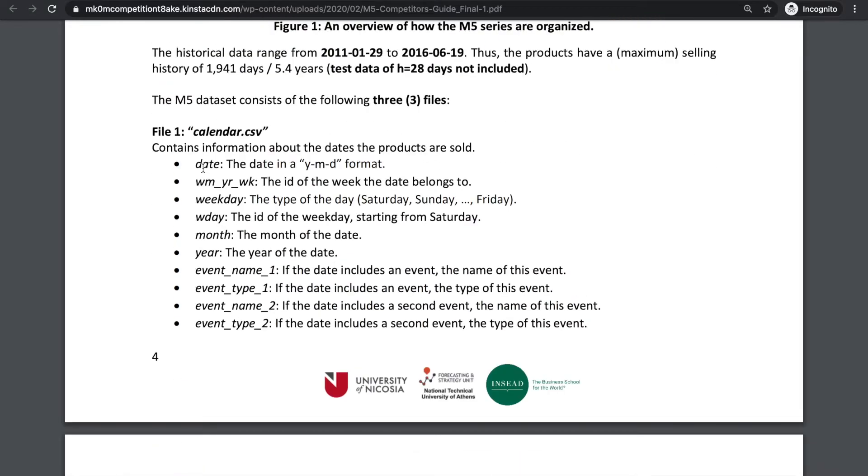The first file, called calendar.csv, contains information describing the date when a product is sold. This includes day of the week, month, year, and whether or not there is an event, such as a holiday.